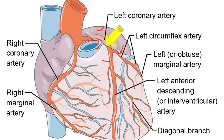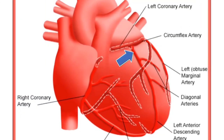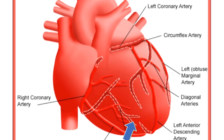The two terminal branches are the left anterior descending artery and the left circumflex artery. In approximately 40% of people, the sinoatrial nodal branch will arise from the circumflex branch of the left coronary artery and will ascend on the posterior surface to the SA node. The anterior interventricular branch will pass along the interventricular groove to the apex of the heart, where it will turn around the inferior border and commonly anastomose with the posterior interventricular branch of the right coronary artery.